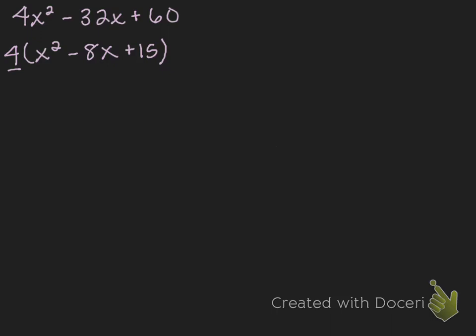From here, I'm going to use my generic rectangle to help me factor further — to get x squared minus 8x plus 15, which is currently a sum, into a product as well.